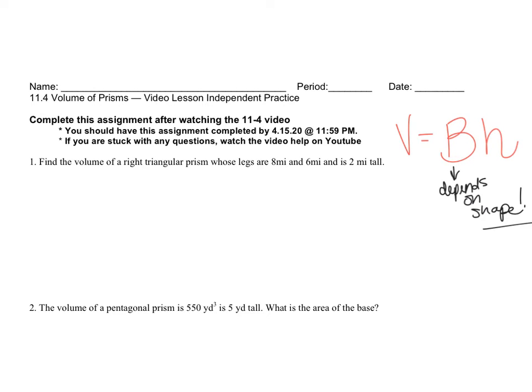In question number one it says find the volume of a right triangular prism whose legs are 8 and 6 and is 2 miles tall. The prism is 2 miles tall. Remember V equals Bh, and right triangles have an area of base times height over 2. So our volume is going to be volume equals Bh over 2 times our height. I'm giving you a heads up, this 2 is your height.